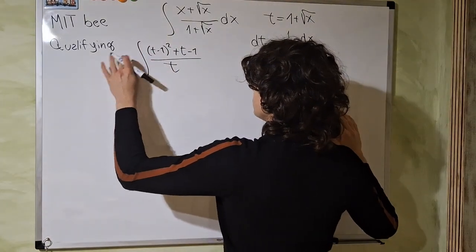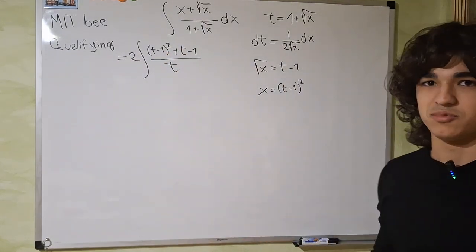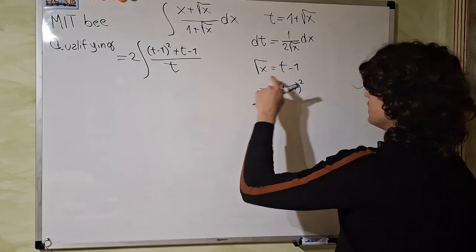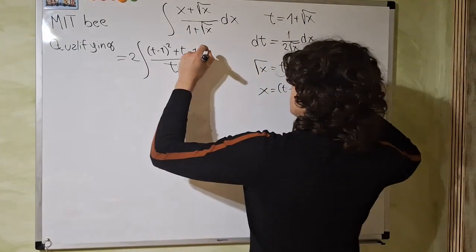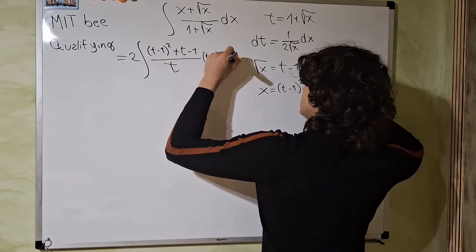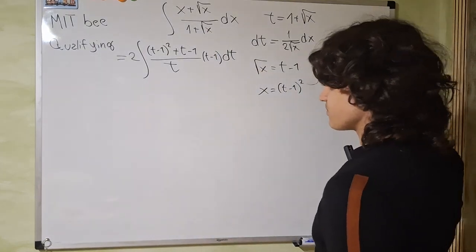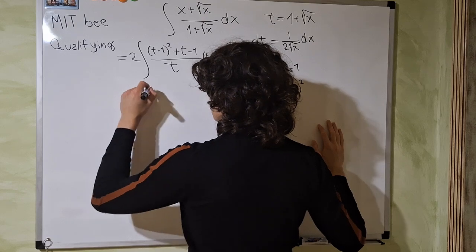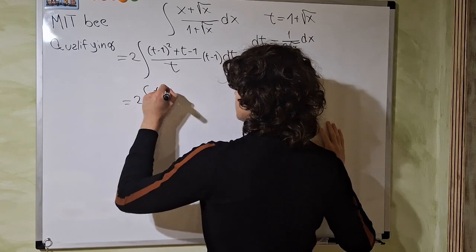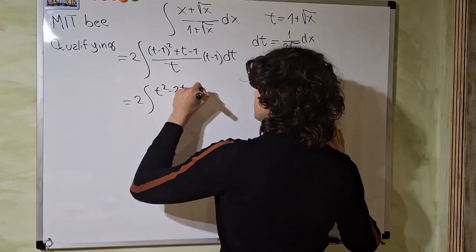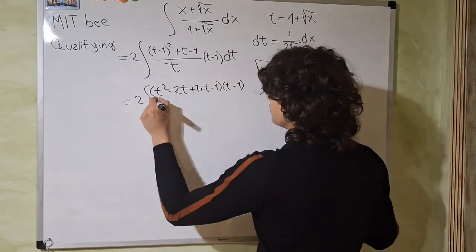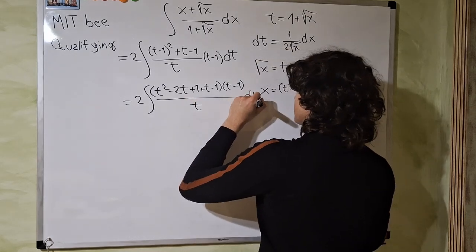So let's do it. We can put the 2 in front, since we can just take the constant and put it outside the integral sign. And the square root of x is t minus 1. So I'm going to replace it with t minus 1 dt this time. Now we can firstly compute the square of t minus 1. So it's easy. t squared minus 2t plus 1 plus t minus 1. And all of this is multiplied by t minus 1. And we basically divide everything by t.